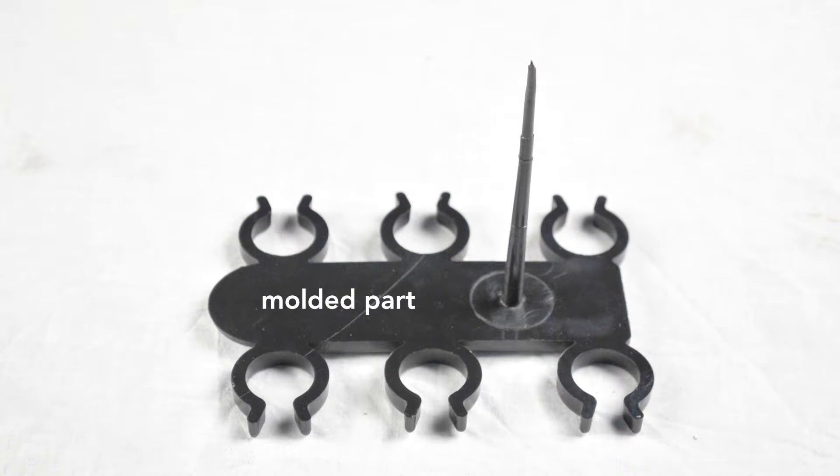When the part drops from the mold, an operator has to remove the sprue, that section of plastic that connected the injection unit to the mold. Sprues are manually twisted or cut off the part. Sprues are attached to objects only in molds that make a single part at a time, like a chair.